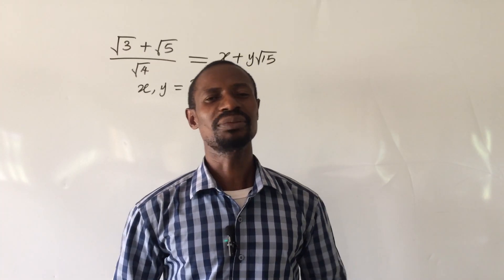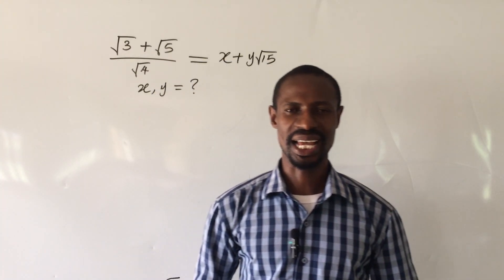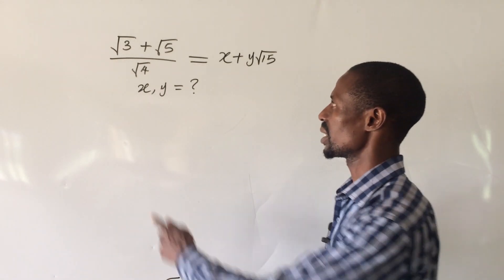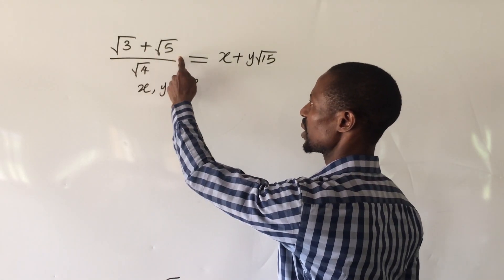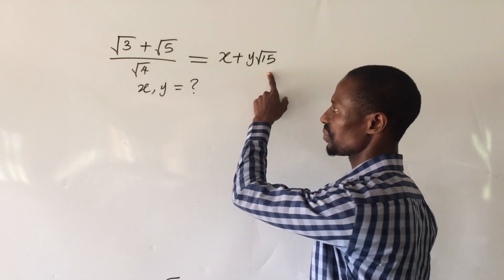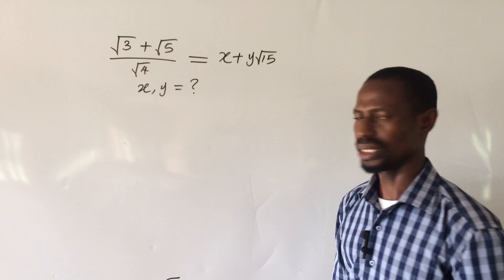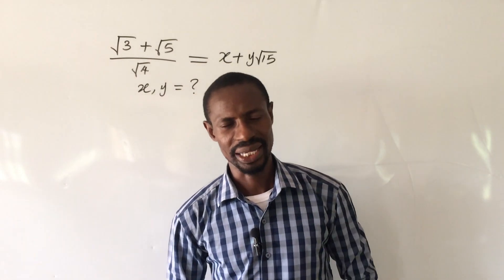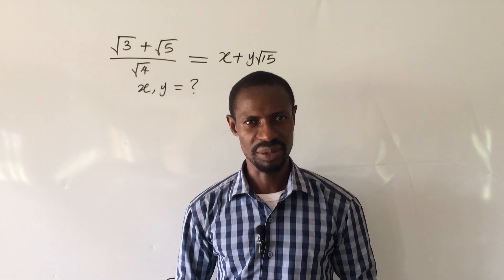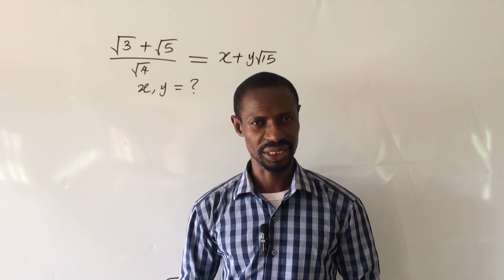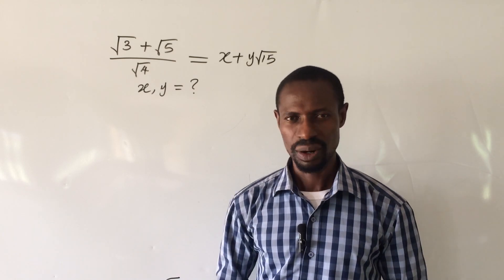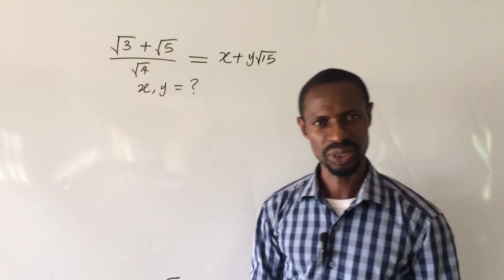Welcome to Online Mass TV. My name is Jakes. Today we have a challenge on the board. The question reads: (√3 + √5) / √4 = x + y√15. What will be the values of x and y? Before we go into today's challenge, if you are new to this channel, kindly subscribe and turn on the bell notification button so that you get notified whenever we drop a video.